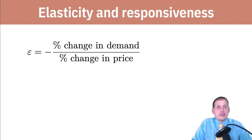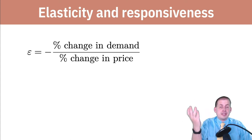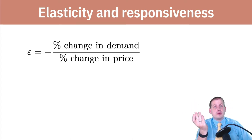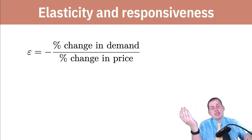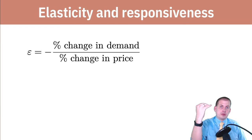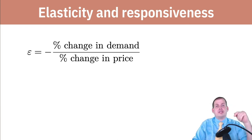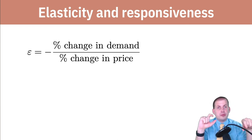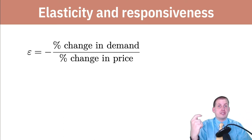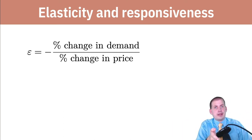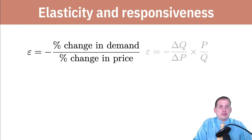So if the price of something changes a lot, then people will move away from it because it's too expensive. Or if the price goes down, then people will flock to it. And there's an actual numeric value we can put on how responsive people are, and we'll look at that numeric value in a minute.